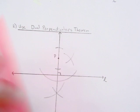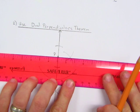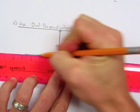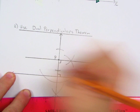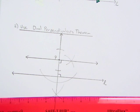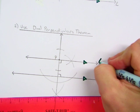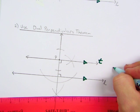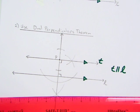From there, draw a line from point P through the intersection. Now you have another perpendicular line. And by the dual perpendiculars theorem, we would know that line T is parallel to line L.